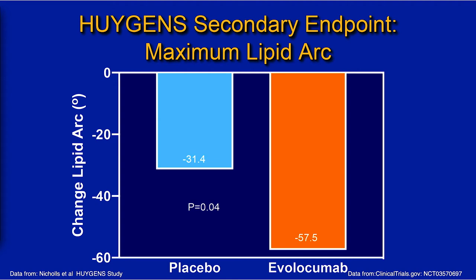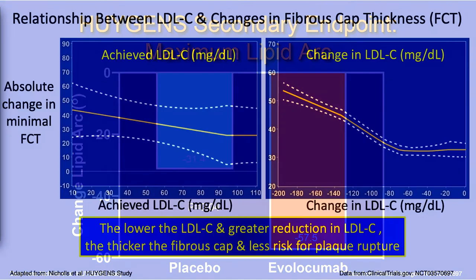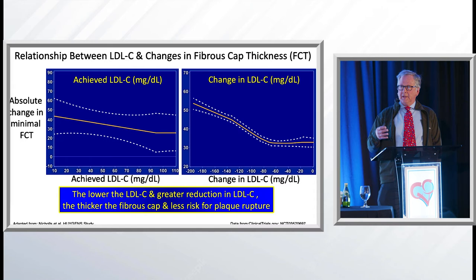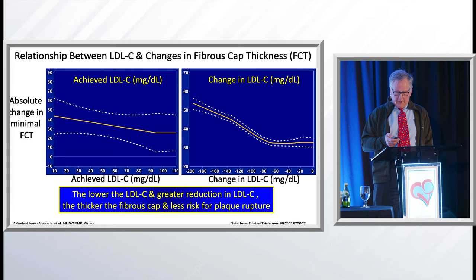You really need CT scans to discern plaque composition. In the Hugen trial, the achieved LDL ranging from 10 to 110 showed that the lower the LDL, the greater the change in minimal fibrous cap thickness. Again, we're seeing it does depend on lipids, but it's much more than just lipids.